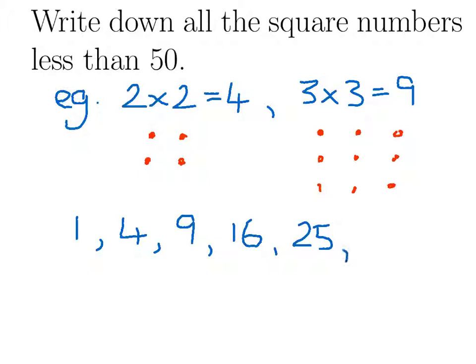5 times 5 is 25. 6 times 6 is 36. And 7 times 7 is 49. And the next one will be 8 times 8, which is 64. That's going to be too big. So those are all your square numbers less than 50.